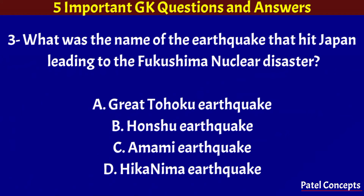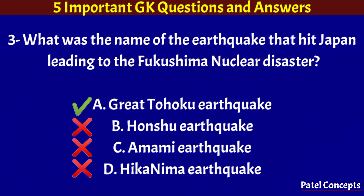What was the name of the earthquake that hit Japan leading to the Fukushima nuclear disaster? Great Tohoku Earthquake.